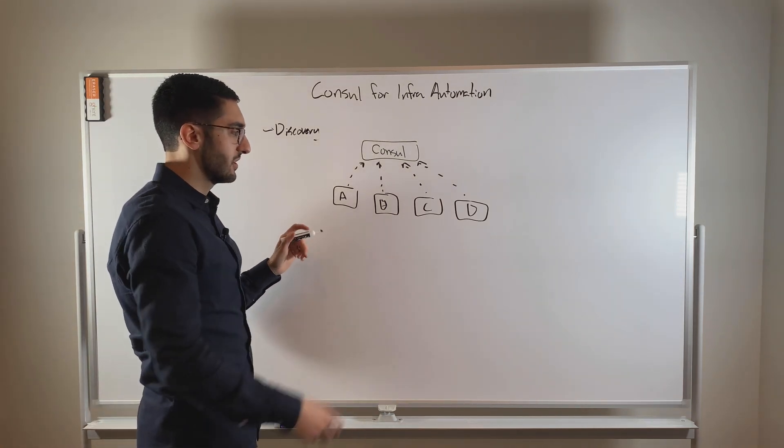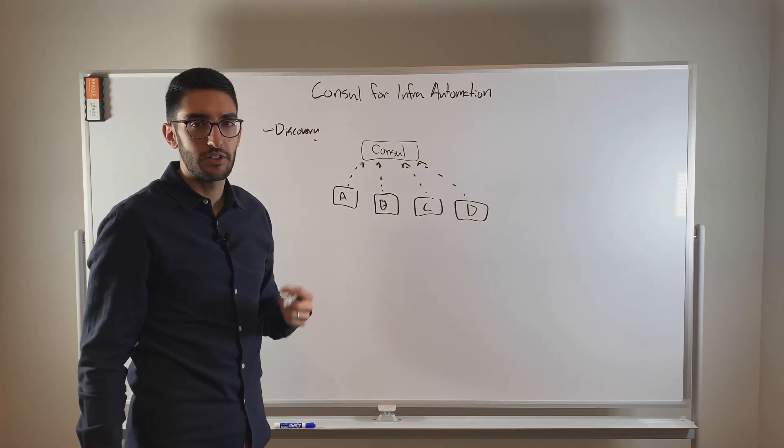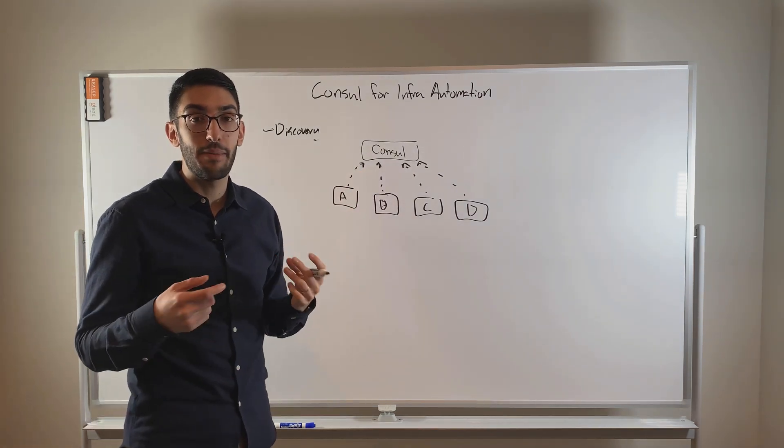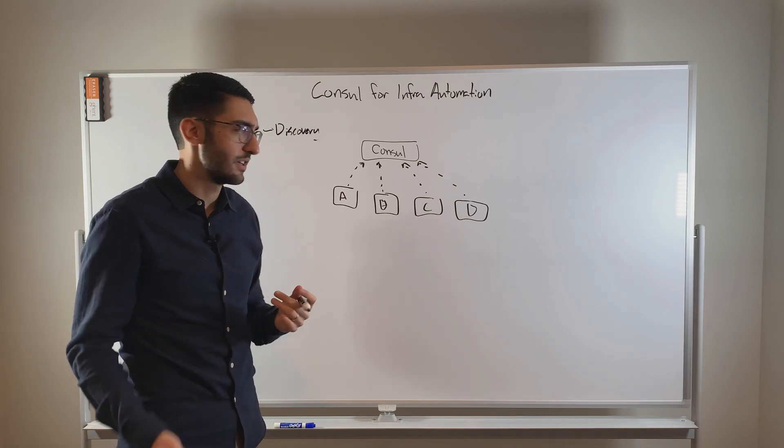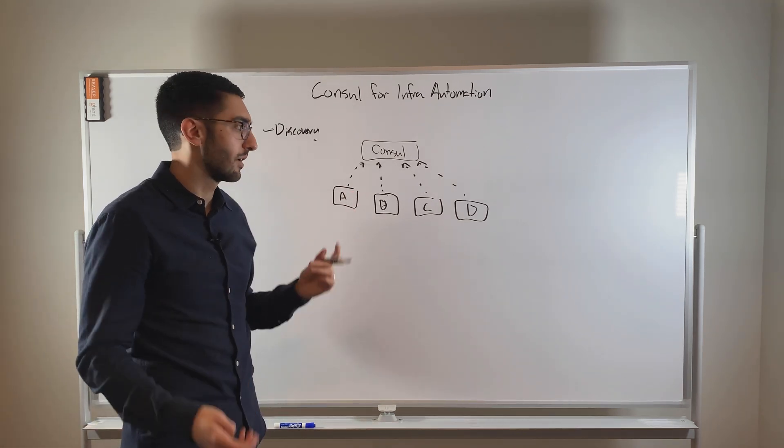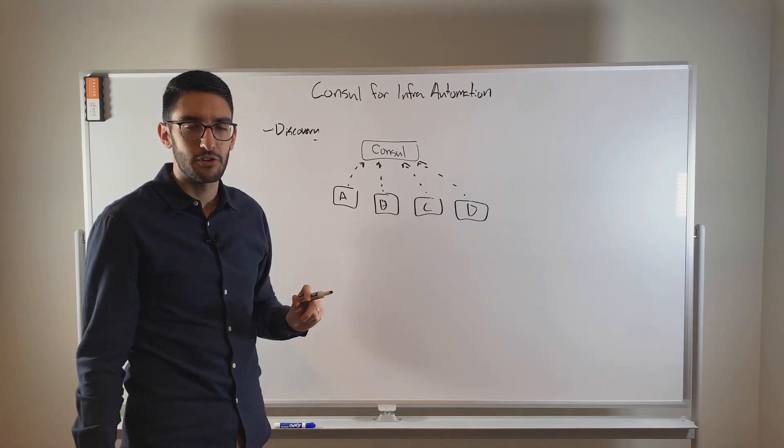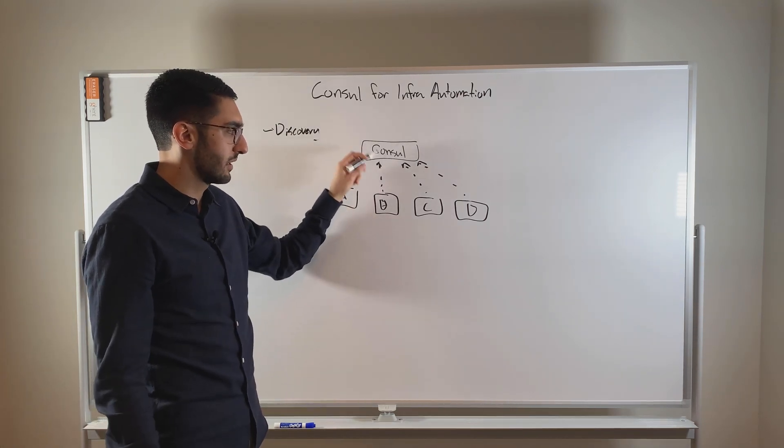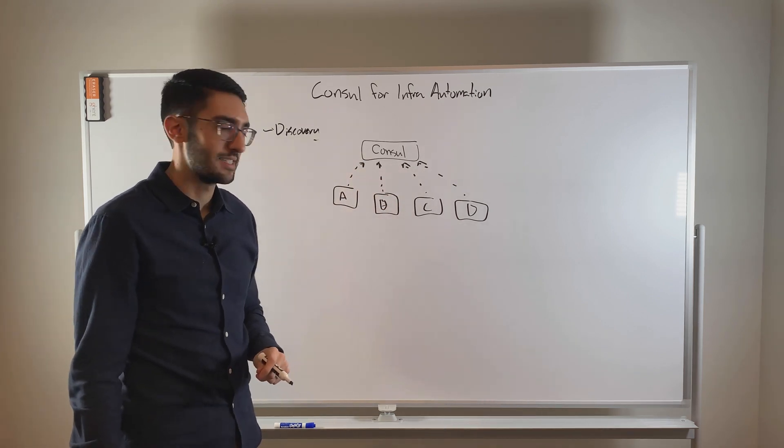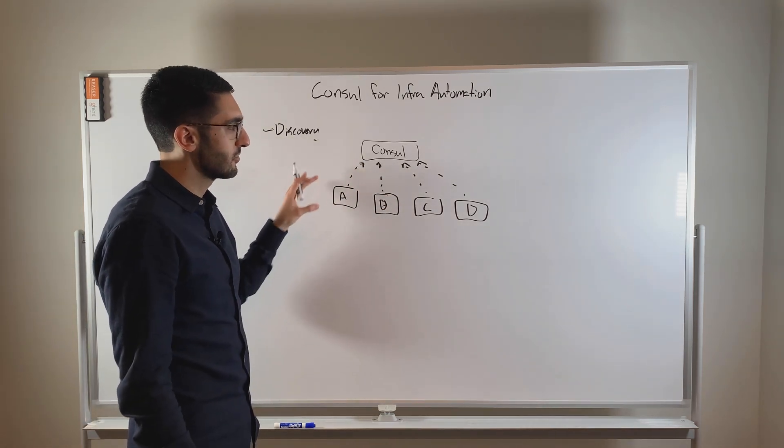So what this enables us to do is as these services want to talk to one another, they can query Consul and use it as a dynamic dictionary or directory of all the different services. One way to think about it is sort of the dynamic linker of the network. Instead of A hardcoding the IP address of B, it's querying Consul and Consul saying, here's the IP to go talk to, or here's the way to get to C.